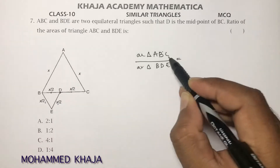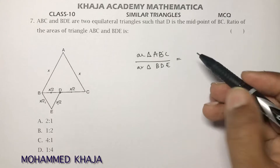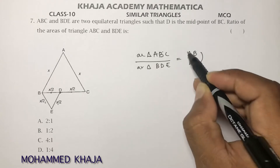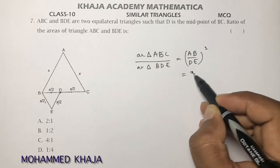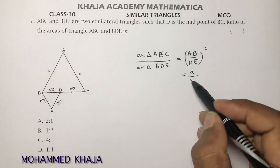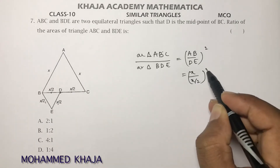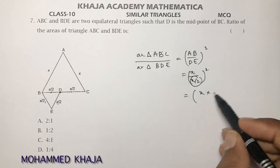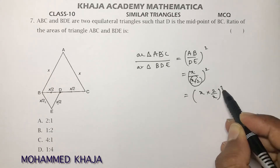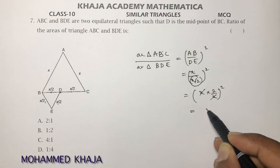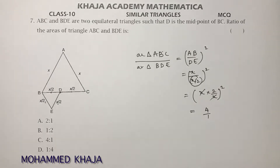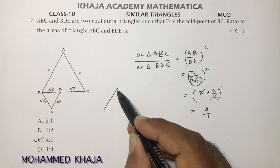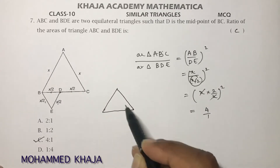Since both triangles are equilateral, they are already similar. Using the ratio of corresponding sides: AB/DE = X/(X/2). When we square this ratio — (X divided by X/2) squared — the X's cancel and we get 2 squared = 4. So the ratio of areas is 4:1, and the correct option is C.